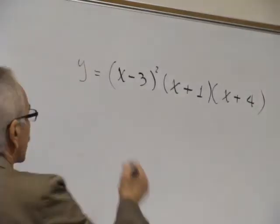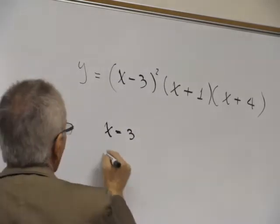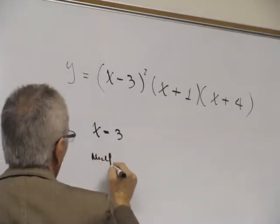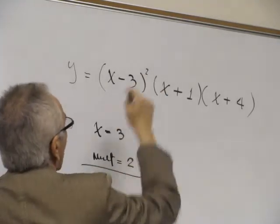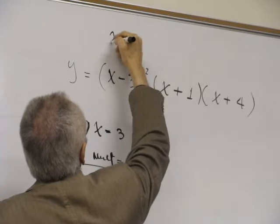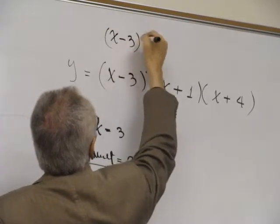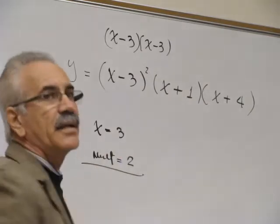So we have here x equals 3, the first solution with multiplicity 2, because the binomial (x-3) appears twice: (x-3)(x-3). You have two solutions. They are the same.